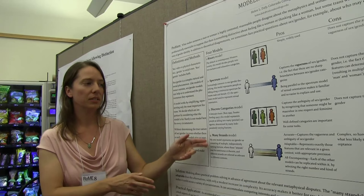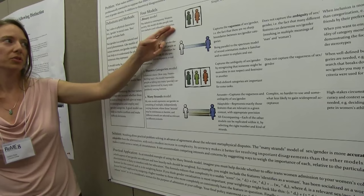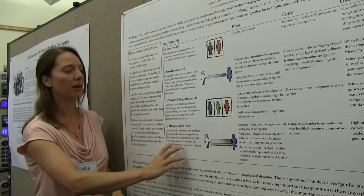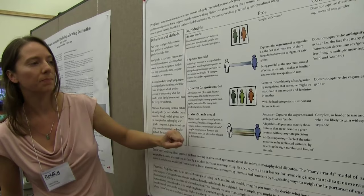Yeah, I think of the different models as being applicable in different cases, but the many strands model also can capture the others — I call it all-encompassing. The way I'm thinking about that is, if you wanted to represent the binary model using the many strands, you could say there's only one feature relevant in this context and treat it as discrete. The model gives you that flexibility. But what this really has going for it is that in practical cases that are really hard to decide, this model shines.